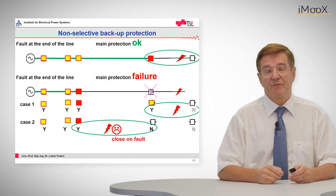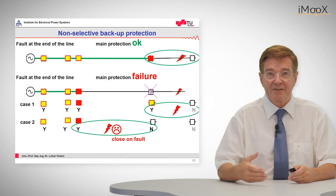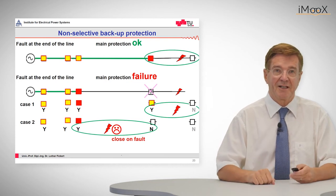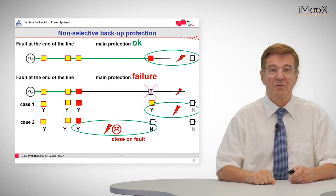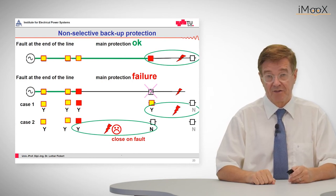And this may unfortunately result later in operation of the network in trying to fix that fault in close on fault operations. So that means the fault point will be energized two times.